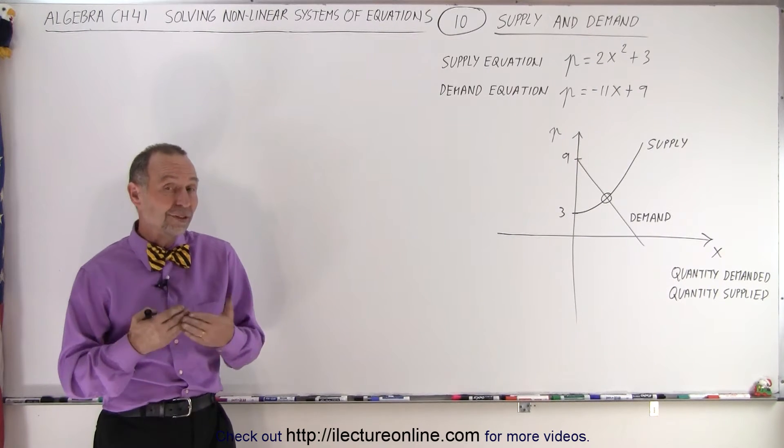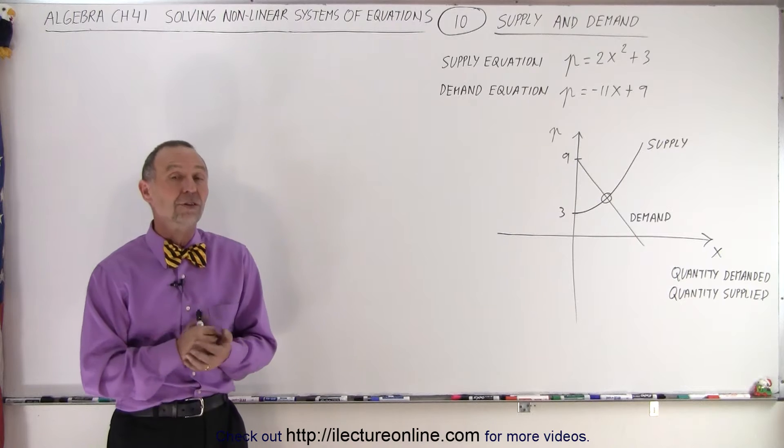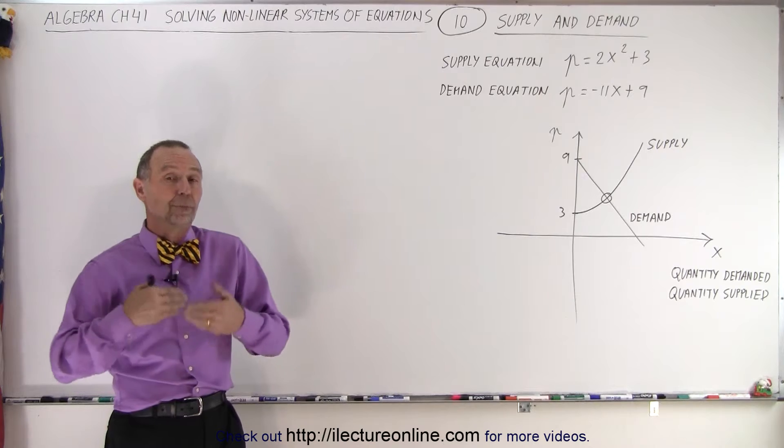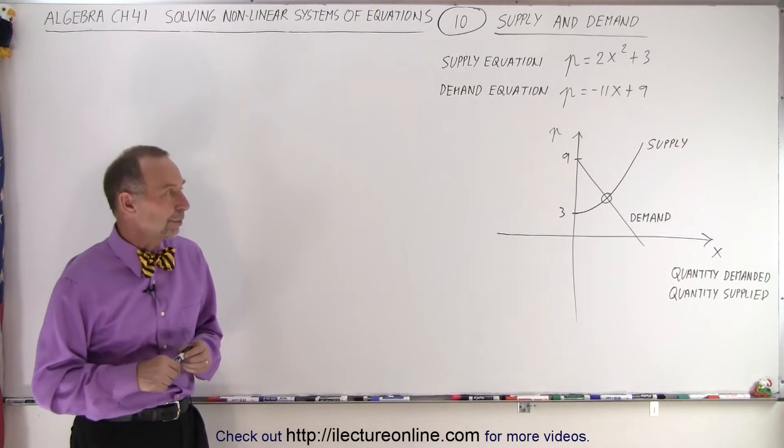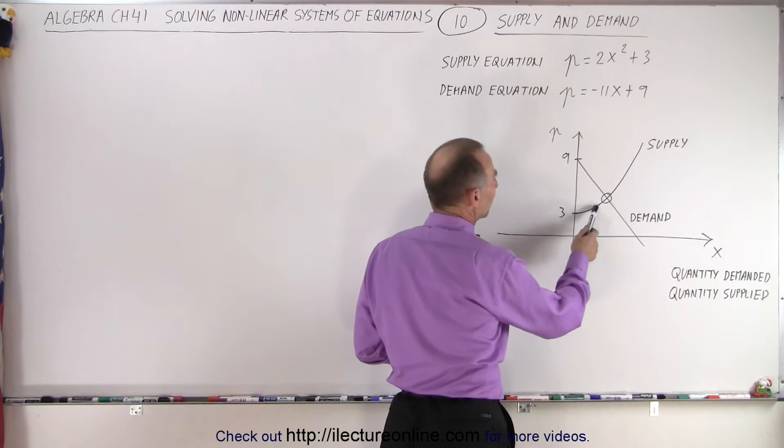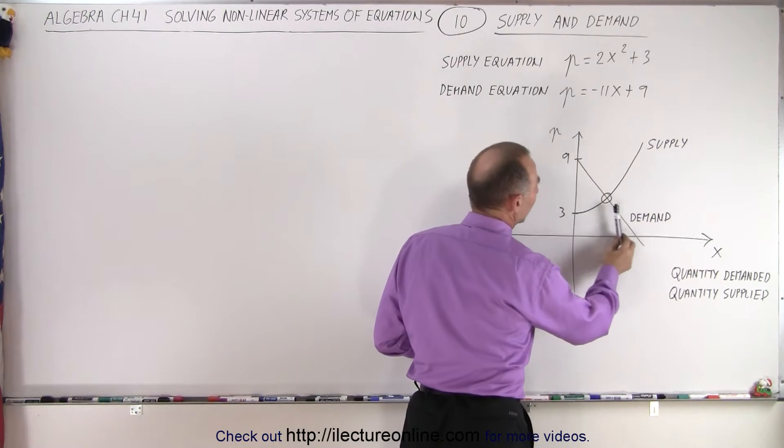So in this example, one of the equations, the supply equation, is a nonlinear equation. And we're trying to find out the point of equilibrium, where the supply and demand will be equal to one another. So you can see here with the supply equation, the higher the price, the greater the supply.